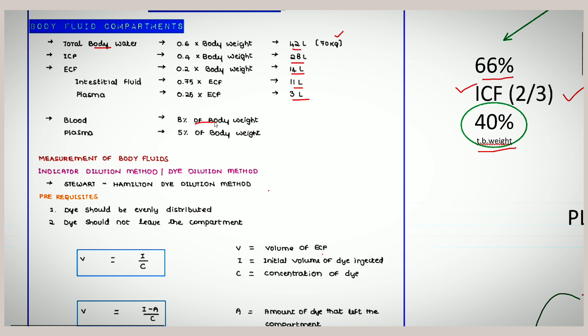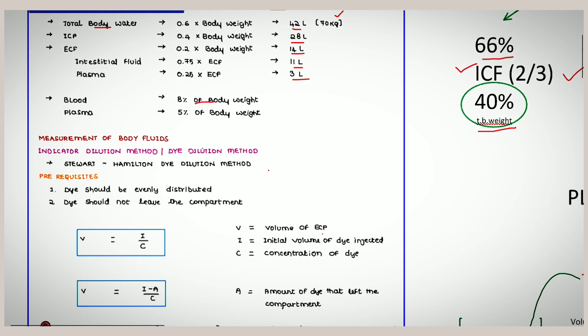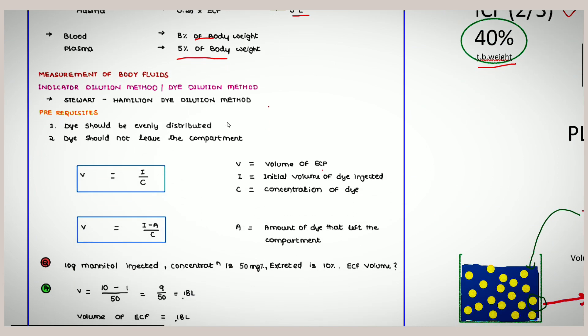Blood consists of 8 percent of body weight and plasma consists of 5 percent of body weight.